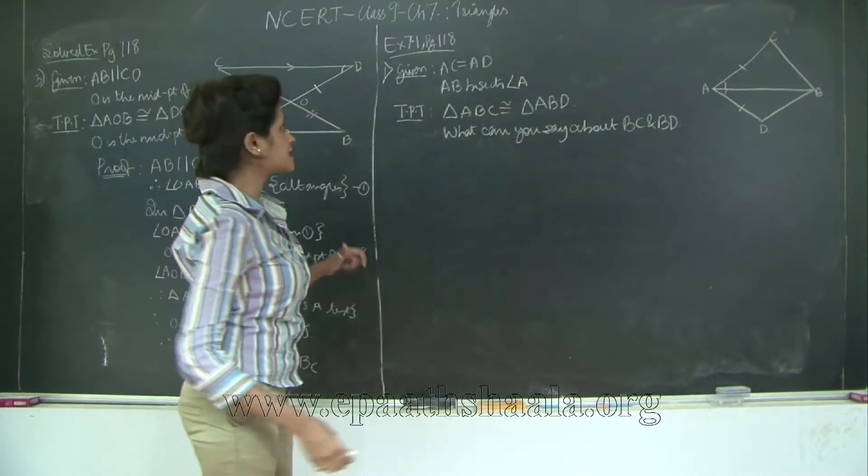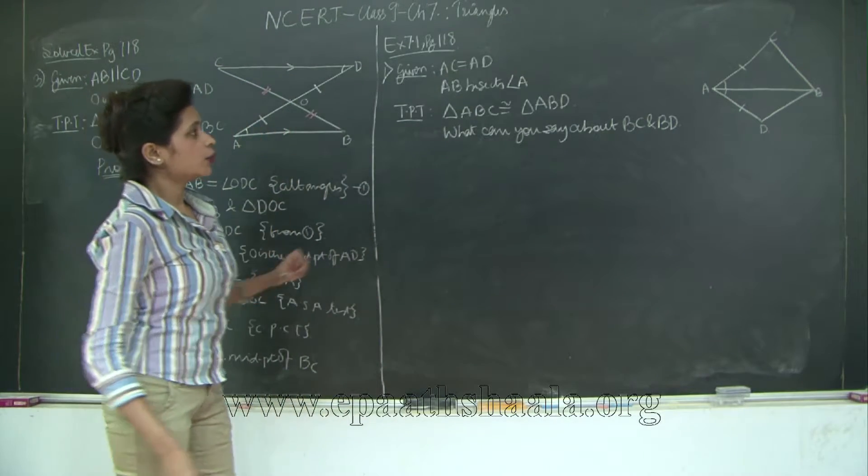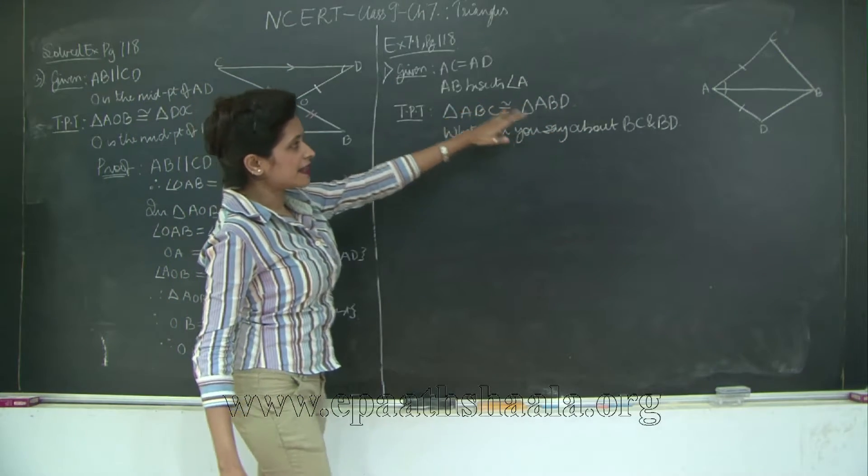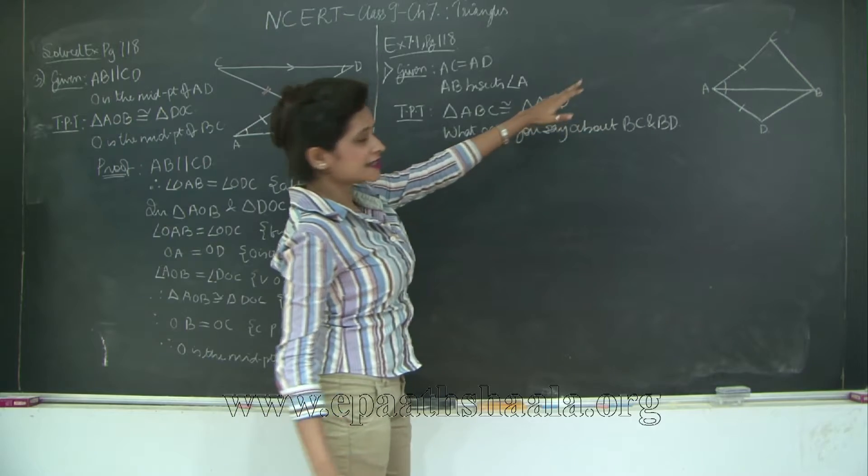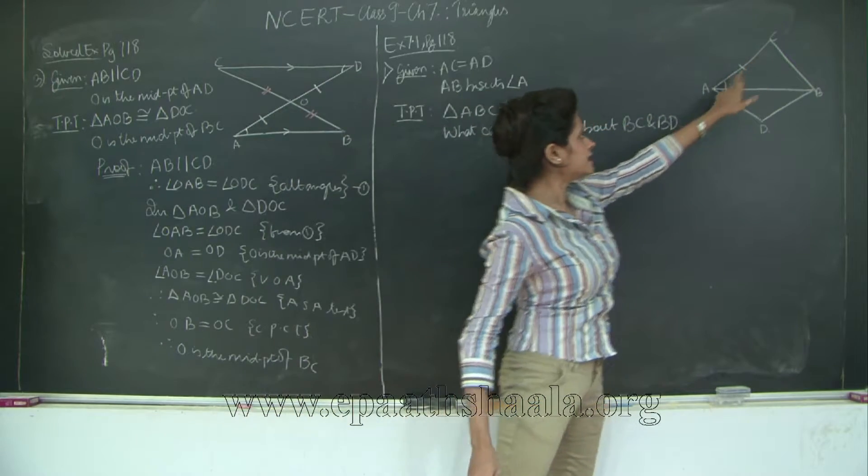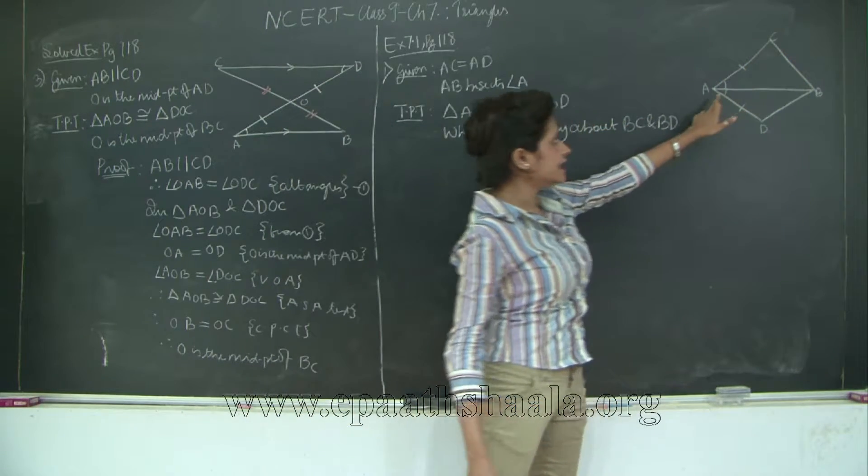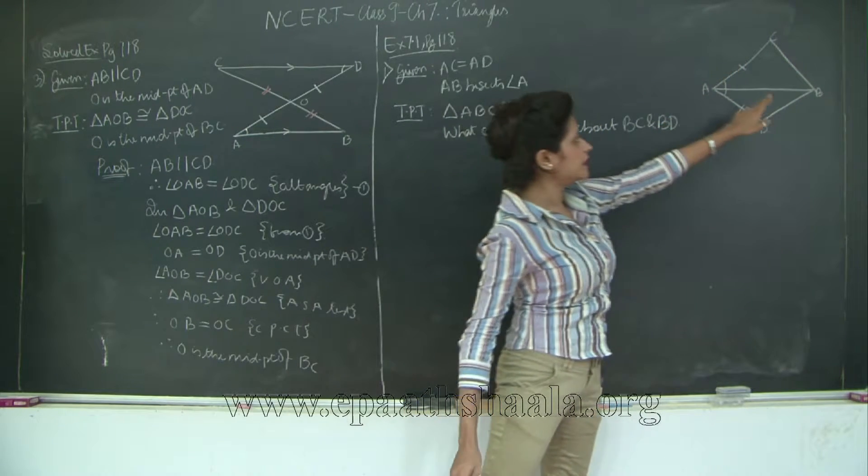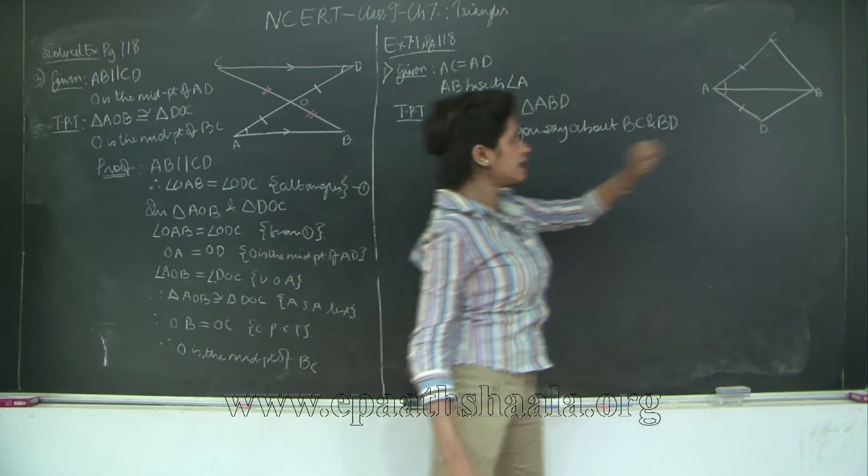We will move on to exercise 7.1. Let's read the question. We have AC is equal to AD which is marked. AB bisects angle A. So which is my angle? My angle is CAD or DAC. It is getting bisected by the angular bisector AB. Therefore I have CAB is equal to DAC, correct?